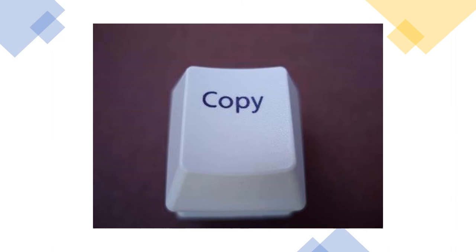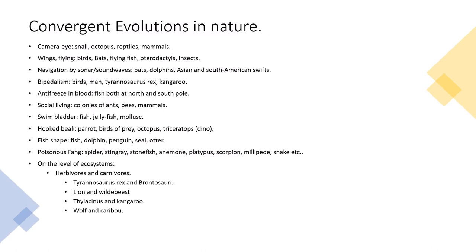For now, we focus on a very peculiar and important phenomenon in evolution: convergences. Convergent evolution is the phenomenon that very different, totally independent lines of development end up with almost exactly the same solutions. One might think evolution can pick solutions from an infinite database of possibilities — which is theoretically true. But what really happens is that every time, solutions are picked from a rather limited set of preferred solutions. The first example is the camera eye: it evolved independently in snails, octopuses, reptiles, and mammals.